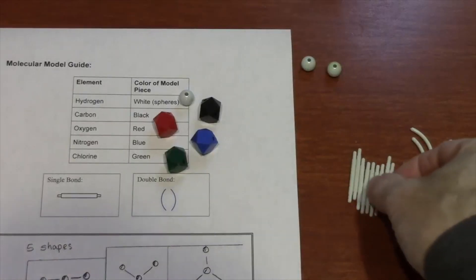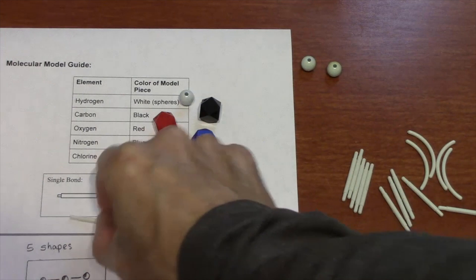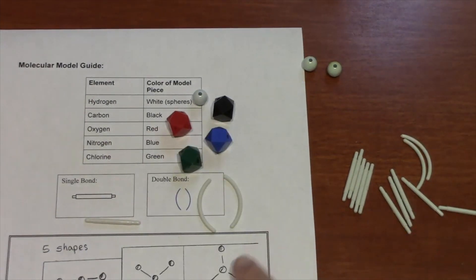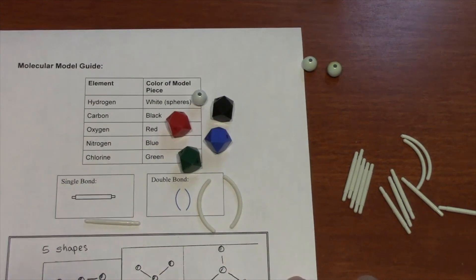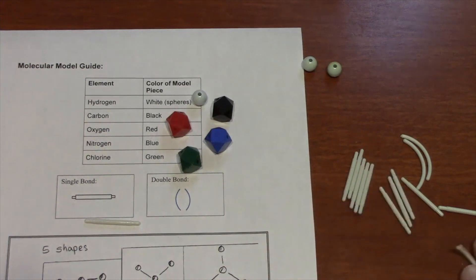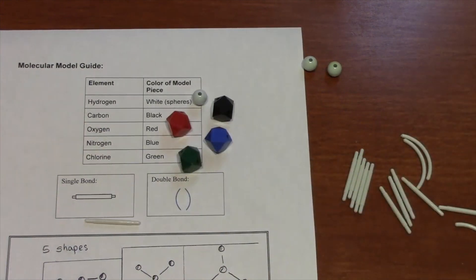These straight pegs are used for single bonds, and the curved pegs are used for double bonds. Today you won't need the double bonds, so just use all straight pegs. We'll use the double bonds tomorrow.